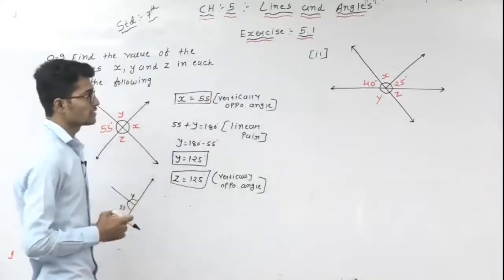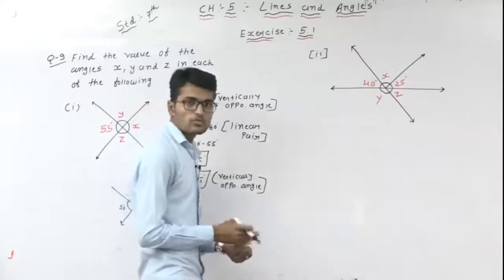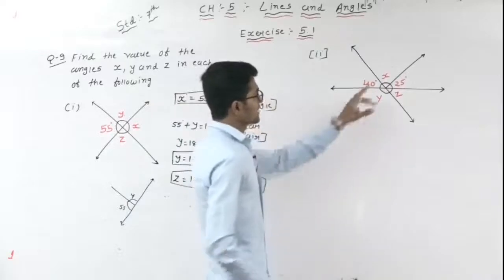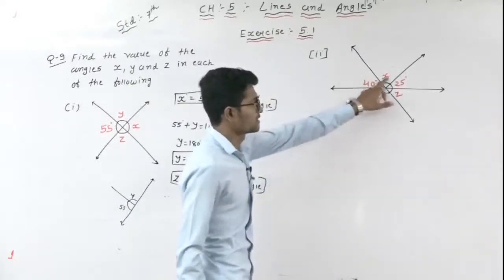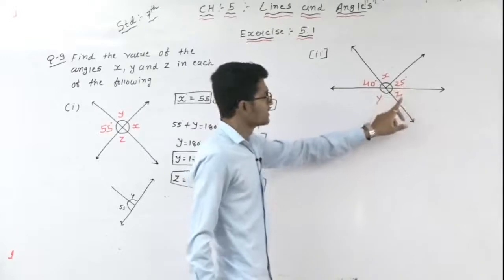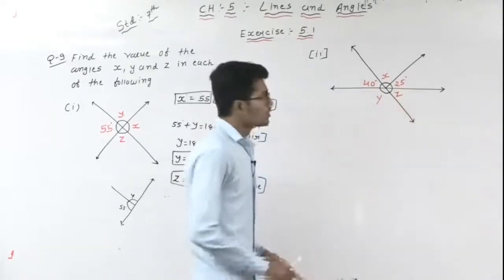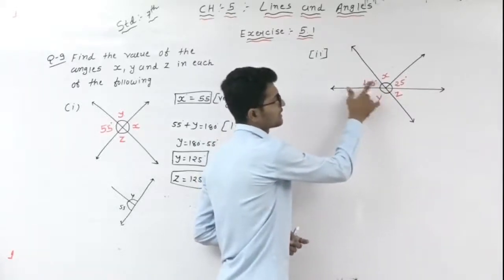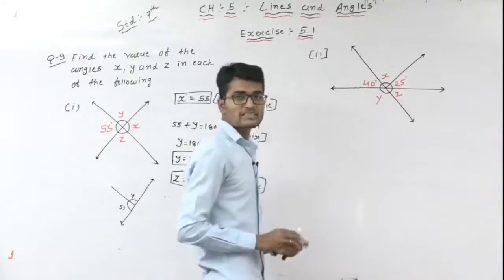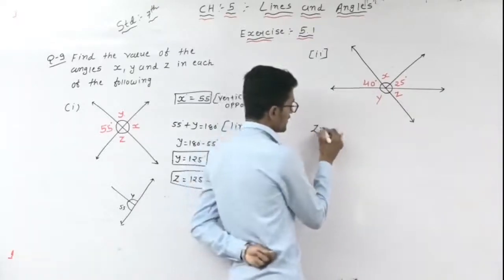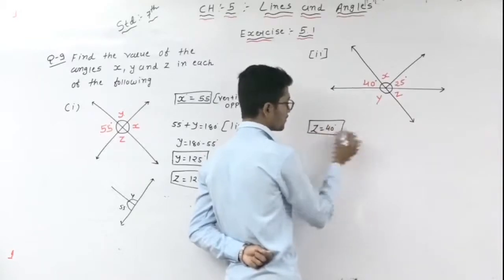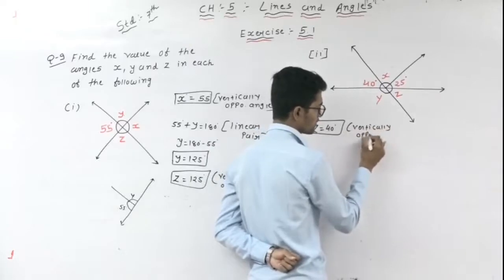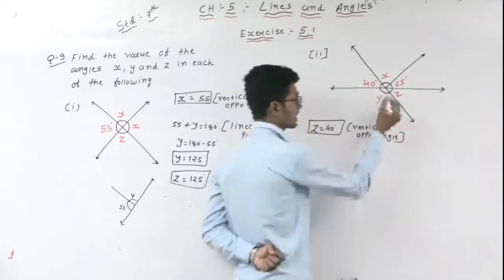Same approach for the second figure. Find the value of X, Y, Z in this figure. This angle is 40, this angle is X, this angle is 25, this angle is Z, and this angle is Y. In this figure, 40 and Z are vertically opposite angles, so Z is equal to 40 degrees, because of the vertically opposite angle property.